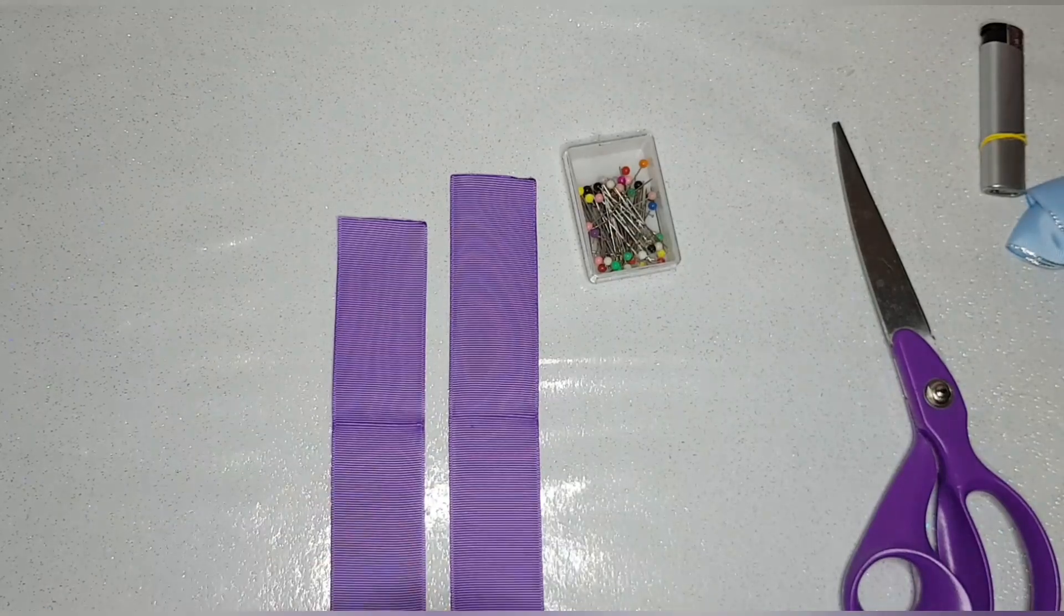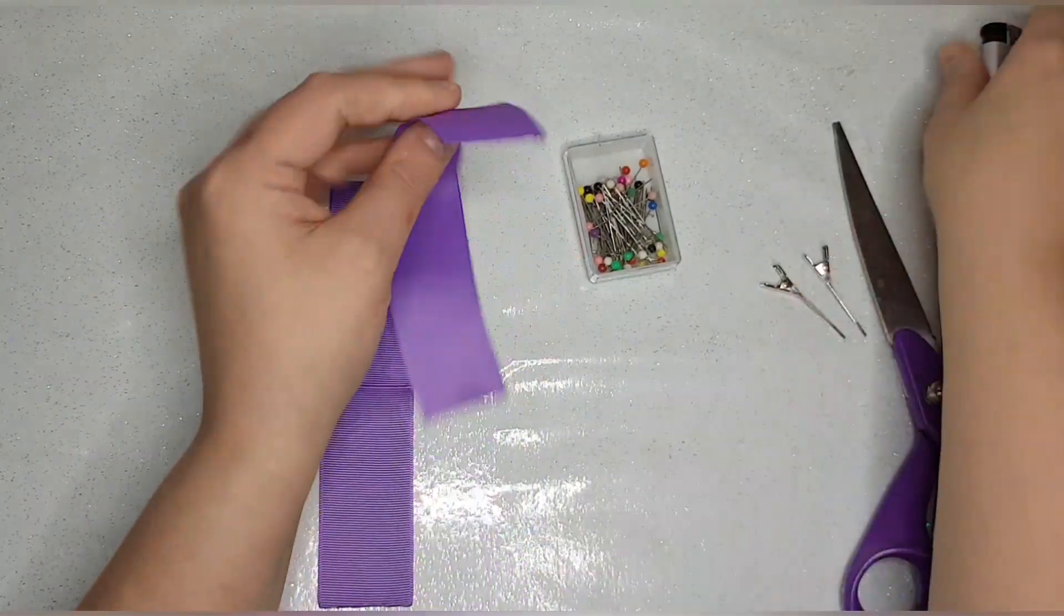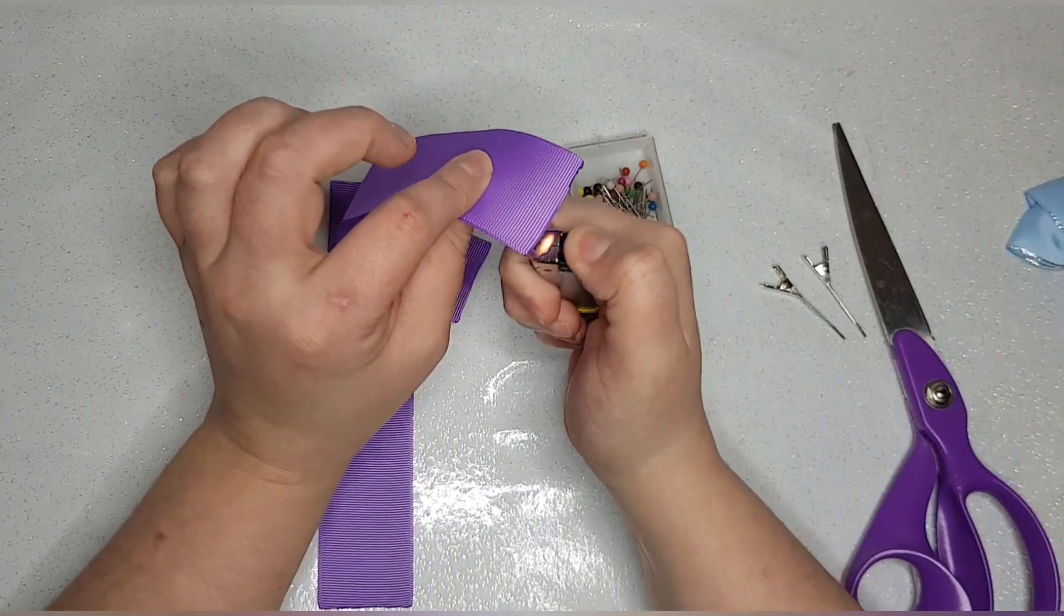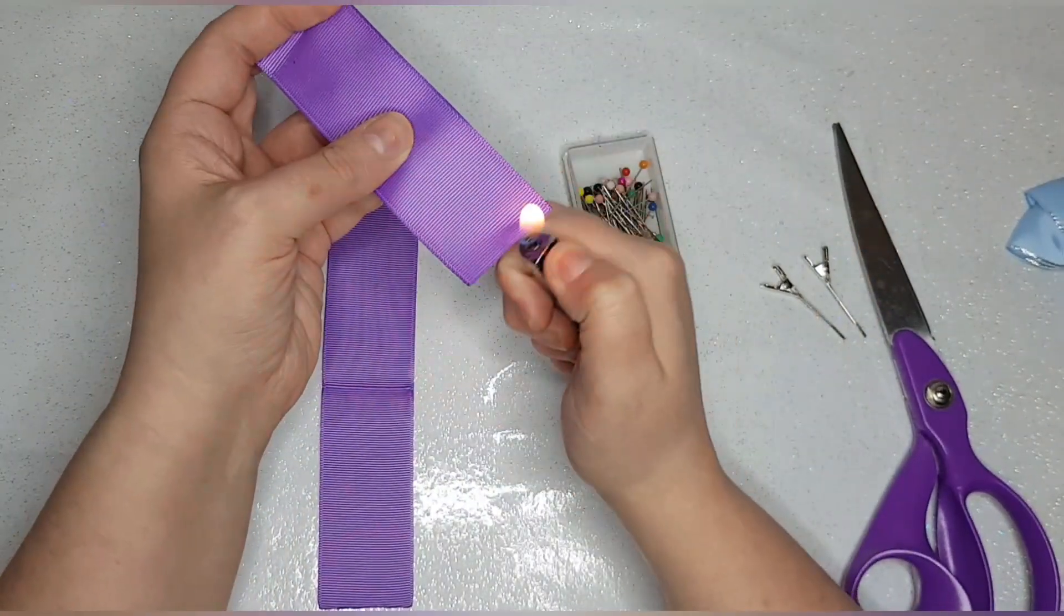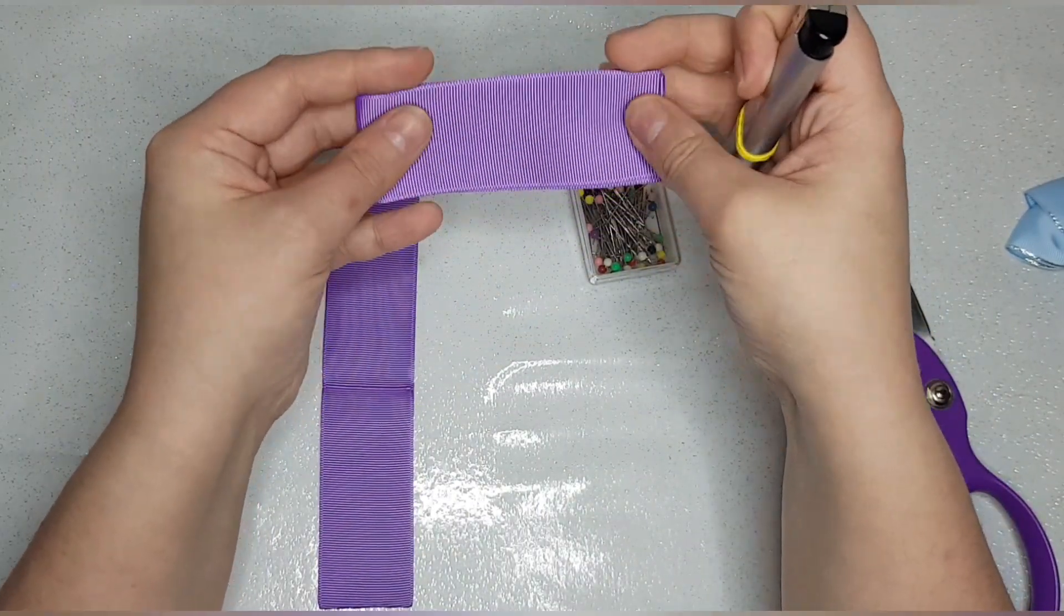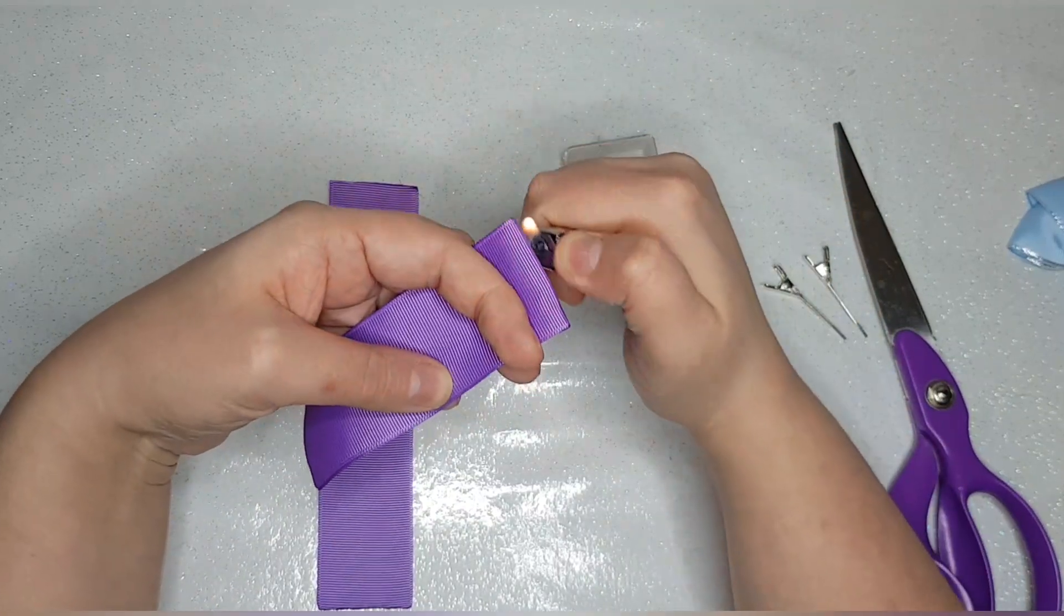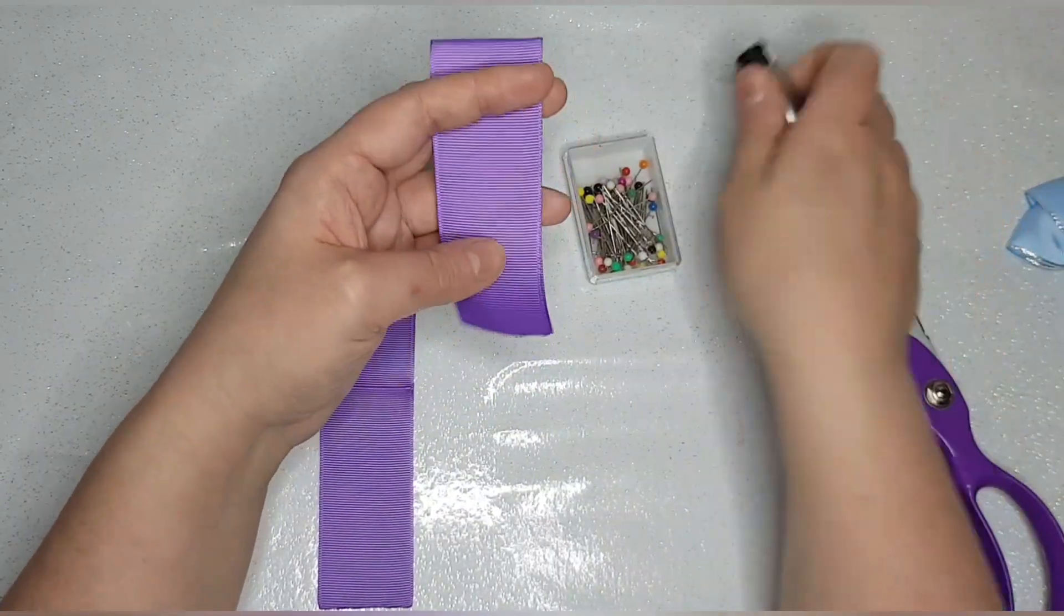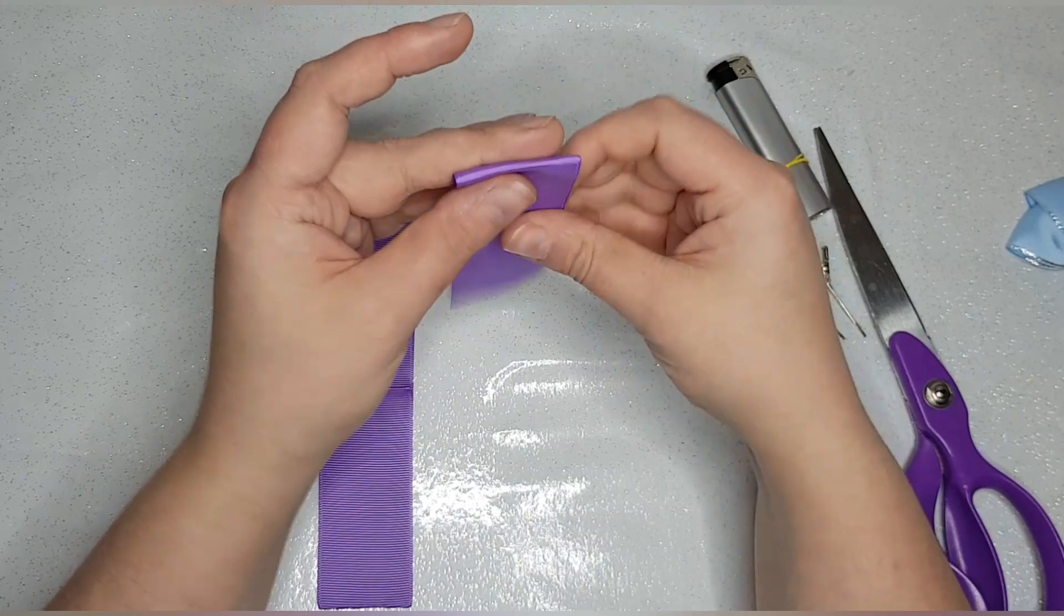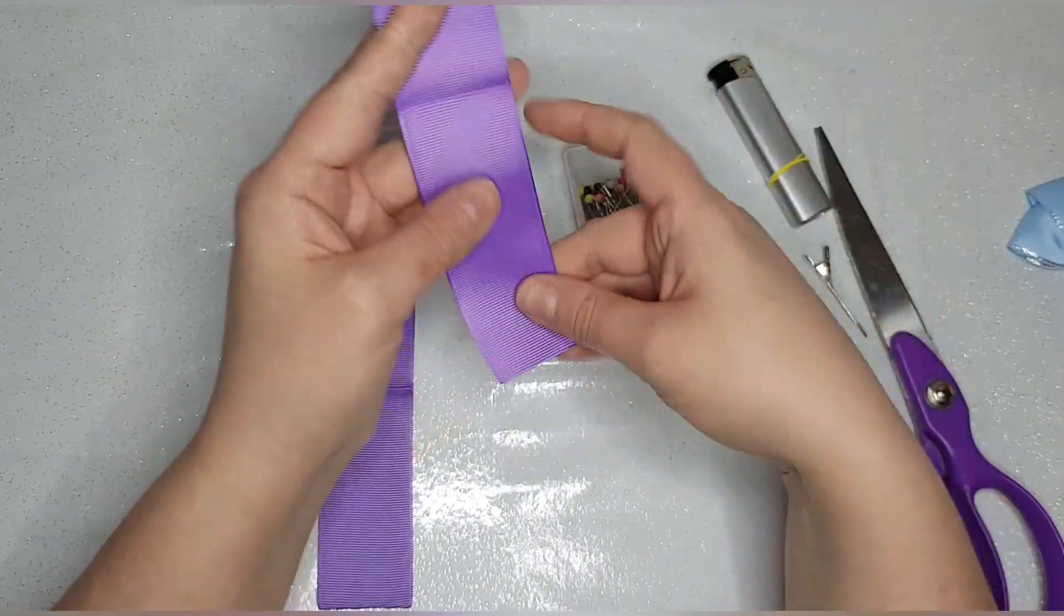As you can see, I have heat sealed my ends. I also have folded both pieces in half like so and I have creased the middles. This is just to give you a nice guide for when we're lining them up.